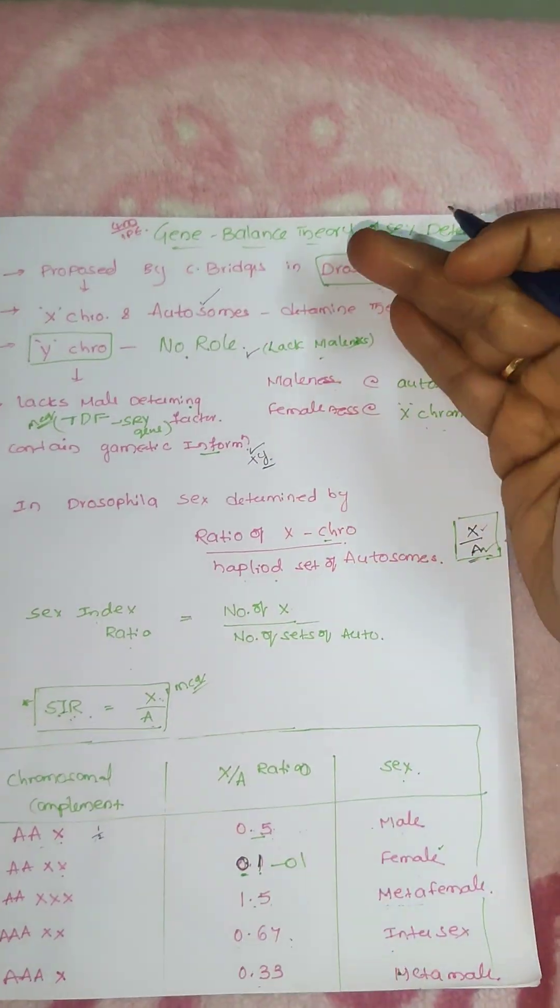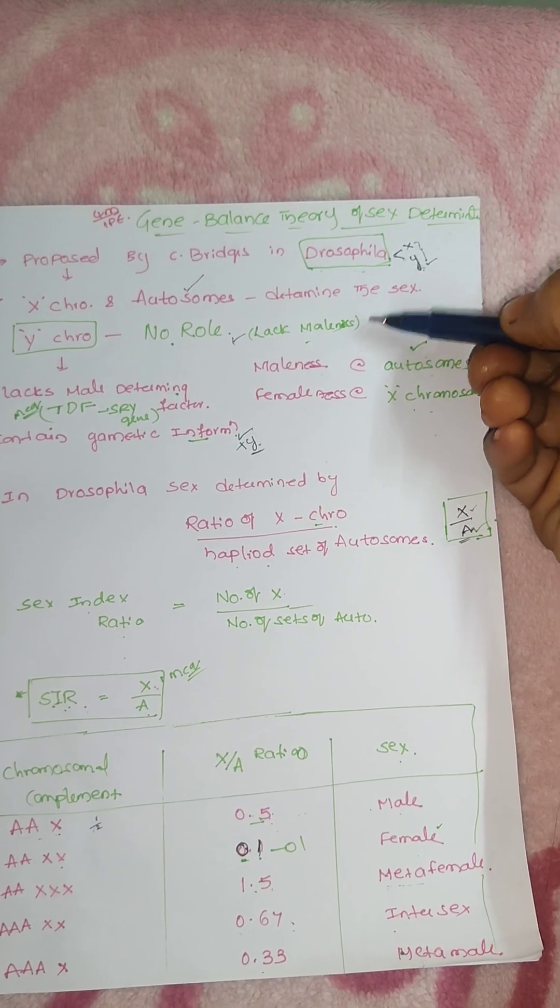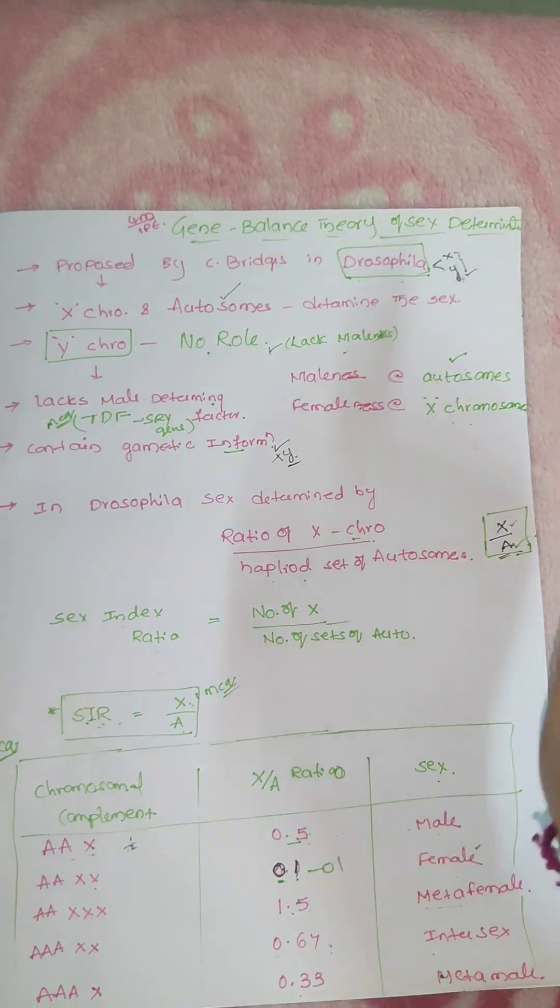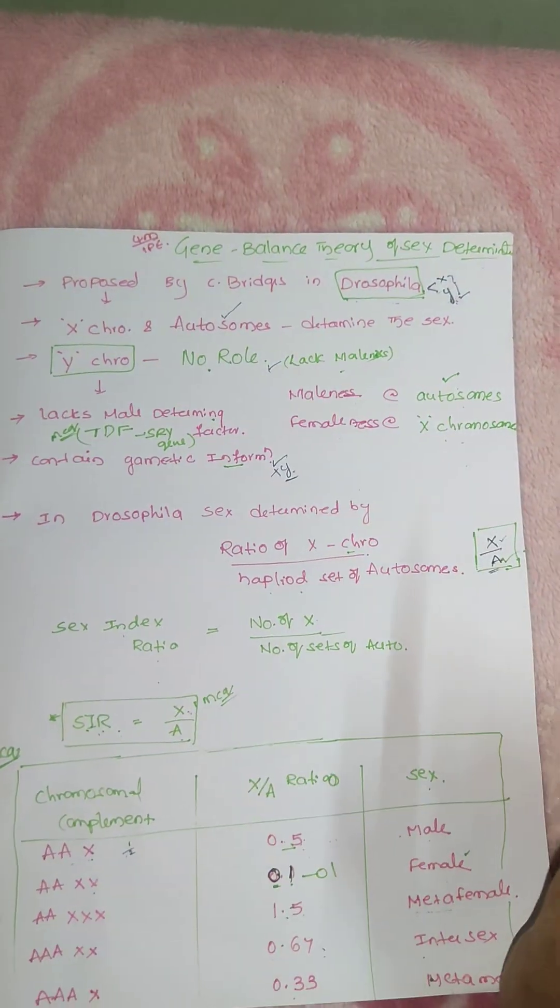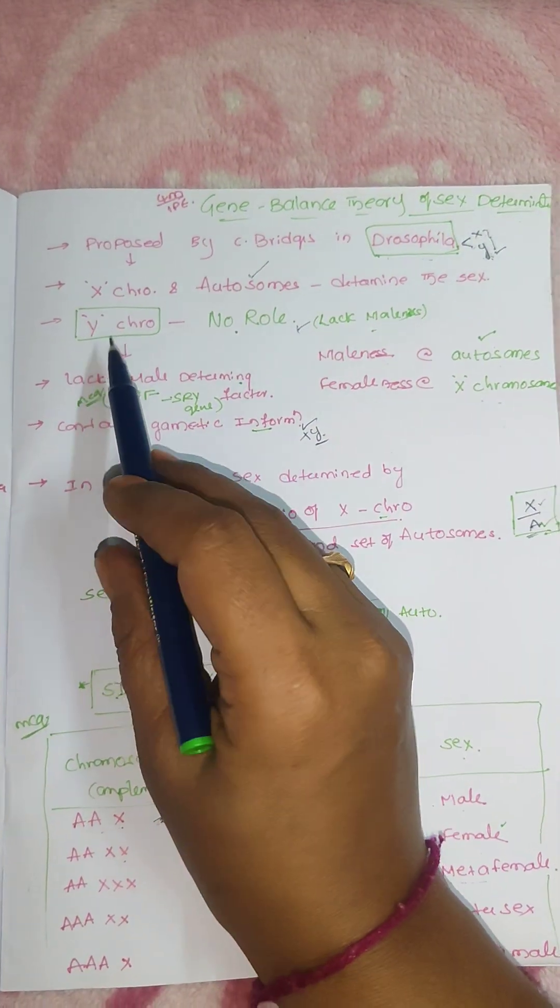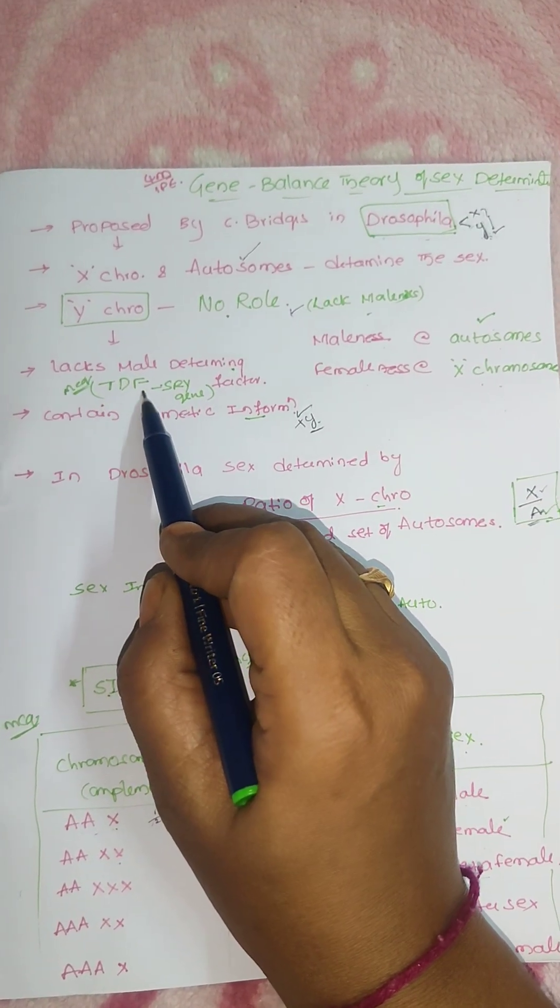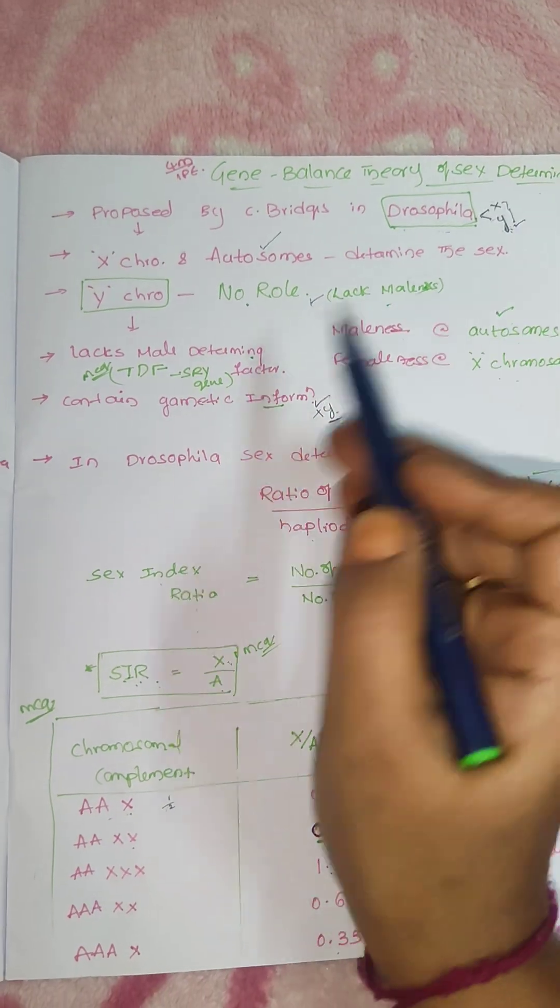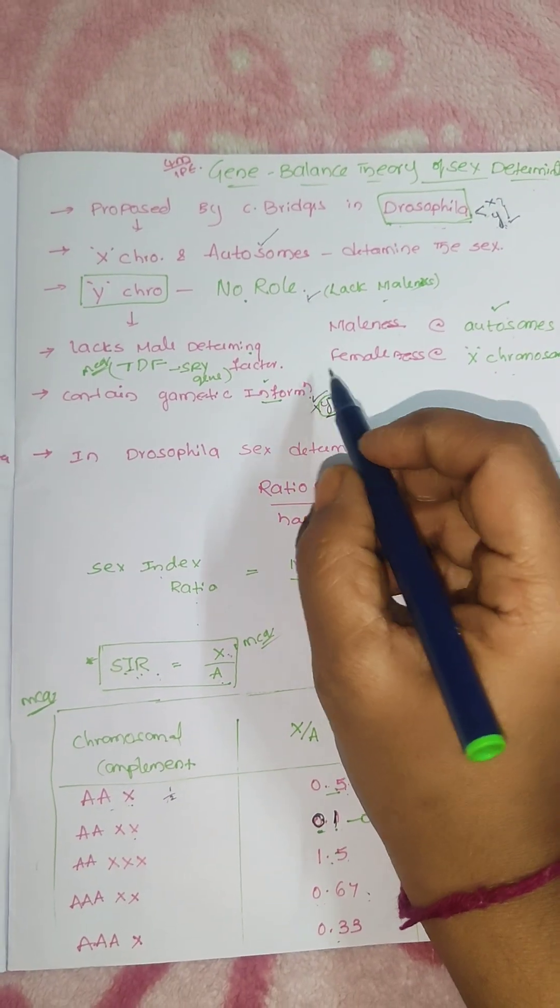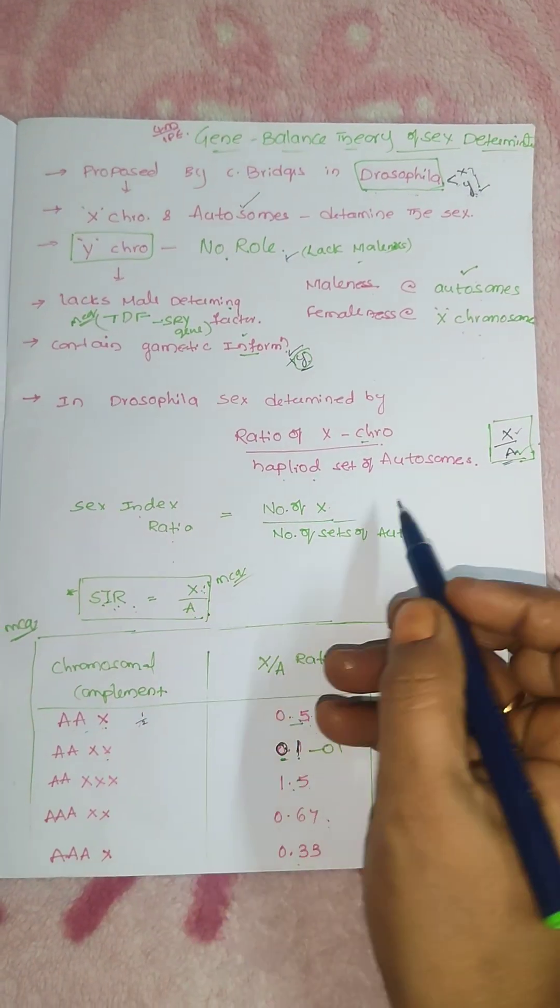So at the end, gene balance theory proposed by CB Bridges in Drosophila. In this one exception is there. There is no role of Y chromosome to determine the sex. Here only the autosomes will decide the sex of the offspring. X chromosome as usual sex determining. Here the Y chromosome lacks male determining factor, that is the sex determining factor or SRY gene. It contains the gametic information like Y chromosome but lacks determining factor. So the ratio is X by A, important for MCQ.